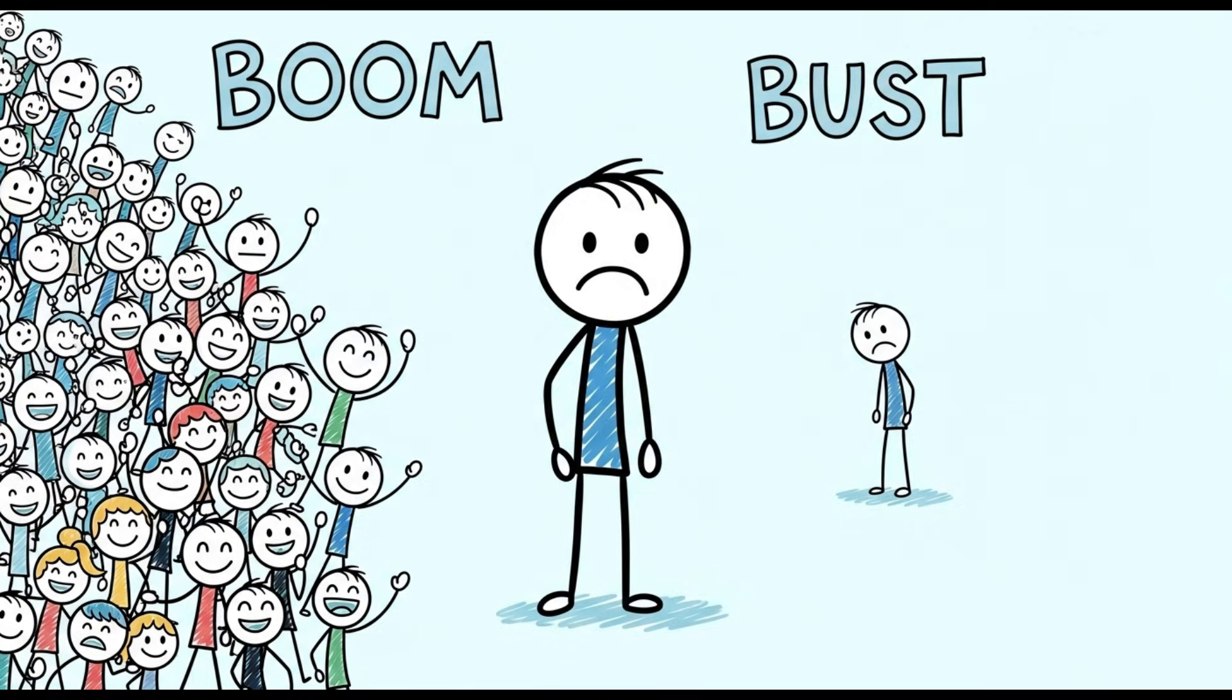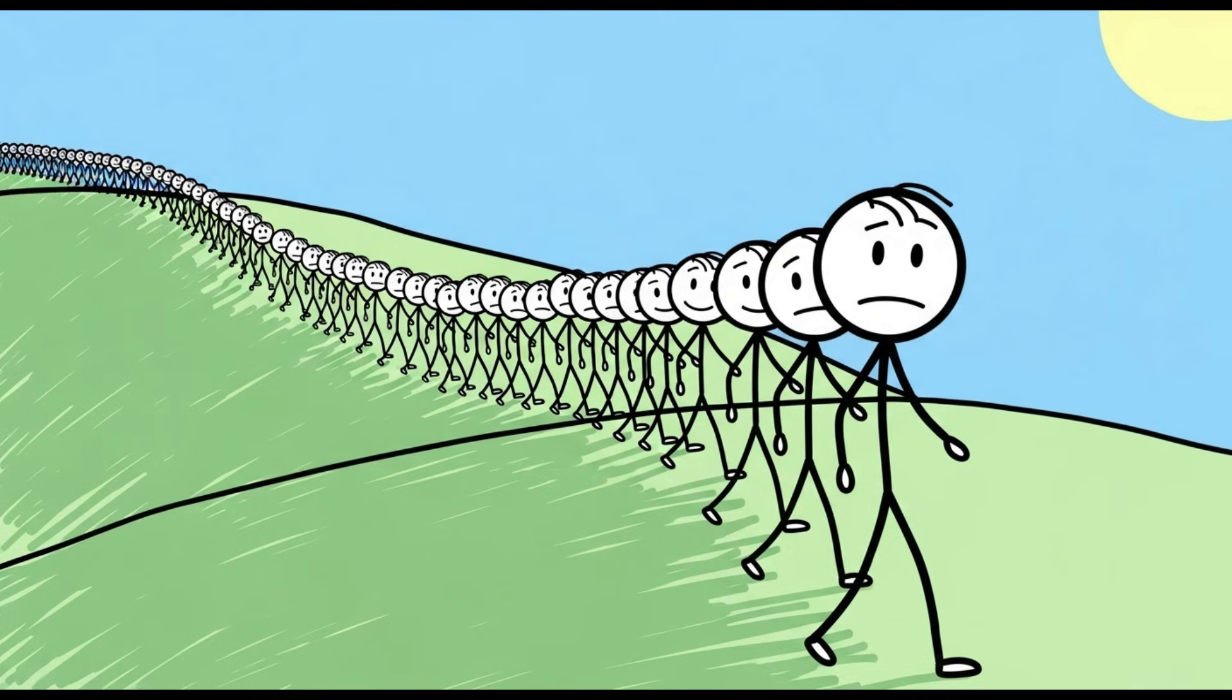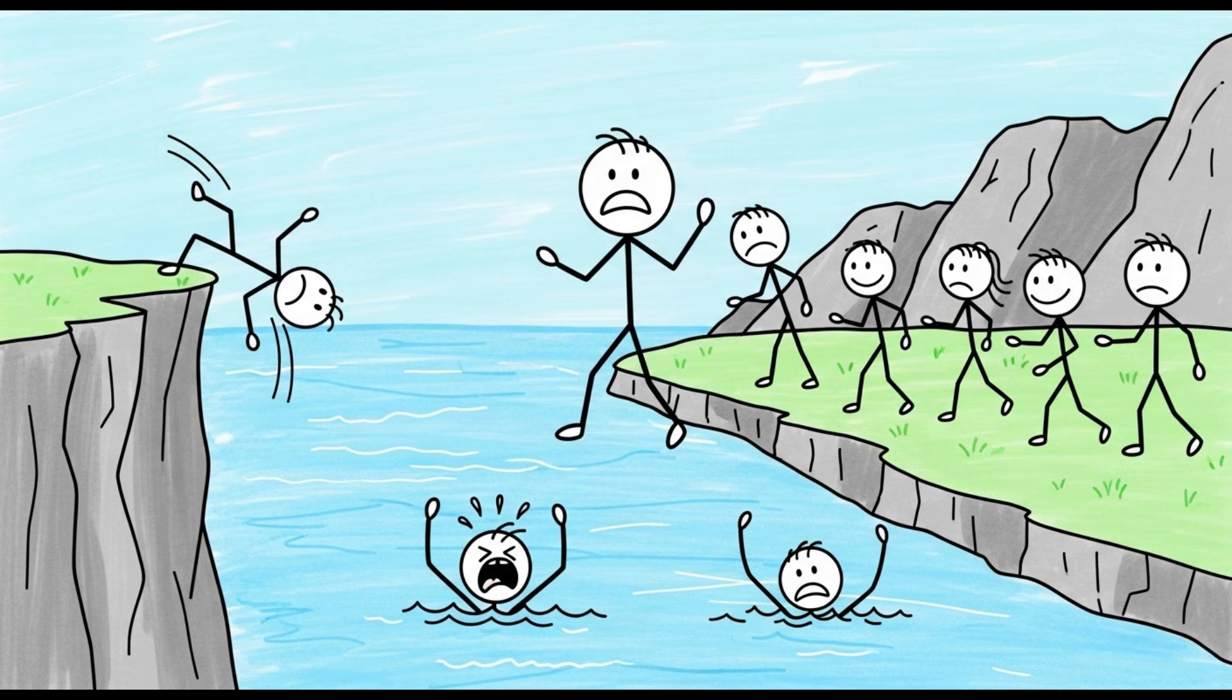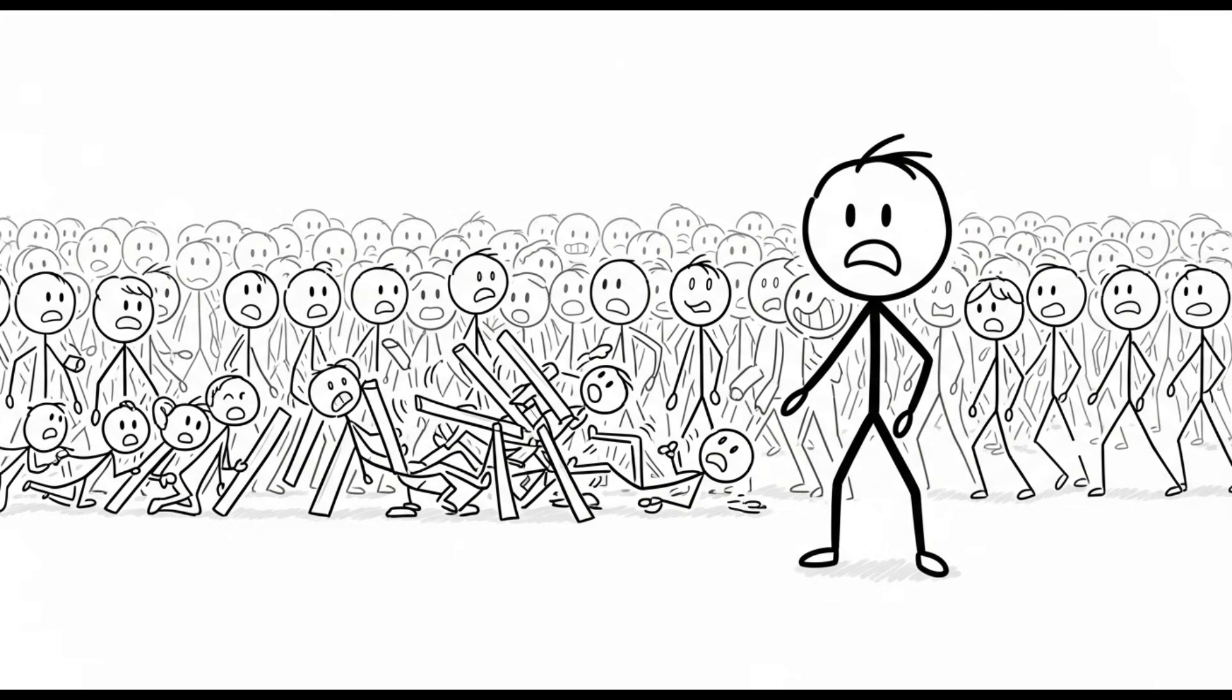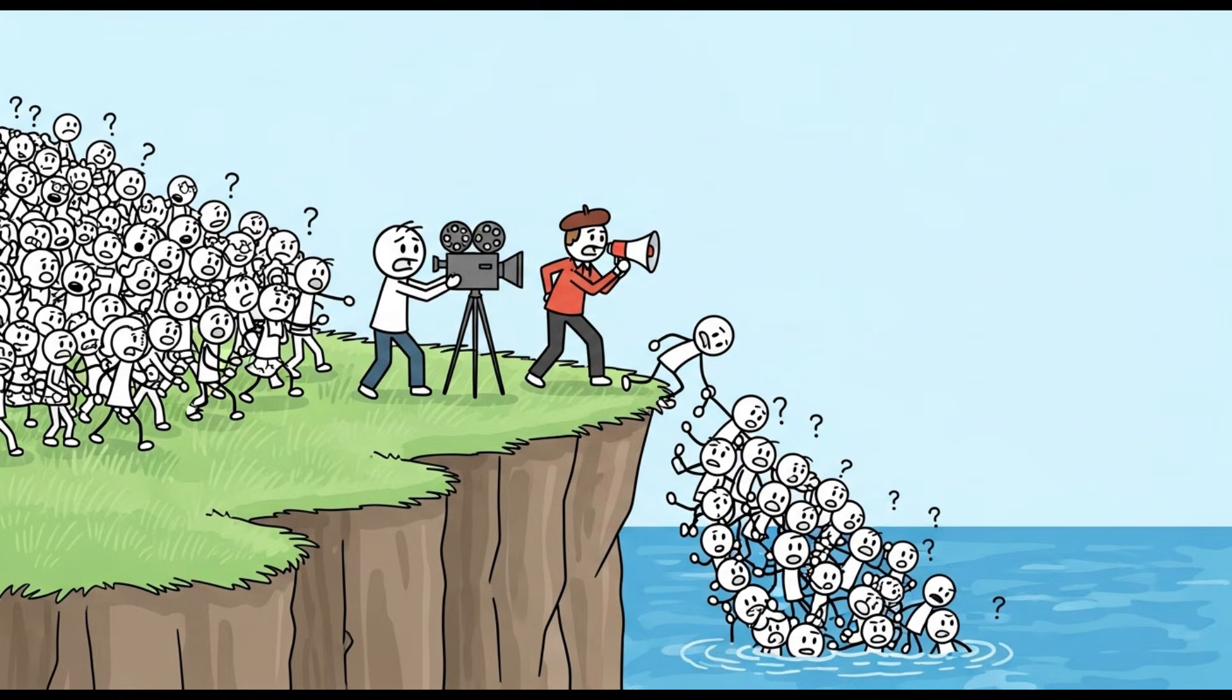Their populations do experience dramatic boom and bust cycles. During a boom, the sheer number of lemmings forces them to migrate in search of food and space. They will cross rivers and streams in their path, and some will inevitably drown or fall from ledges by accident. But there is no suicidal intent. There is no death wish.